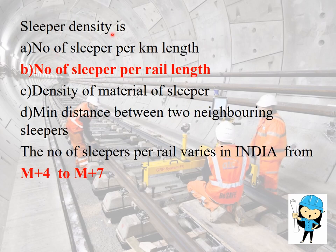The sleeper density is defined as the number of sleepers per rail length. The number of sleepers per rail varies in India from m+4 to m+7, where m is defined as the length of the rail in metres. For broad gauge, the length of the rail is 13 m.